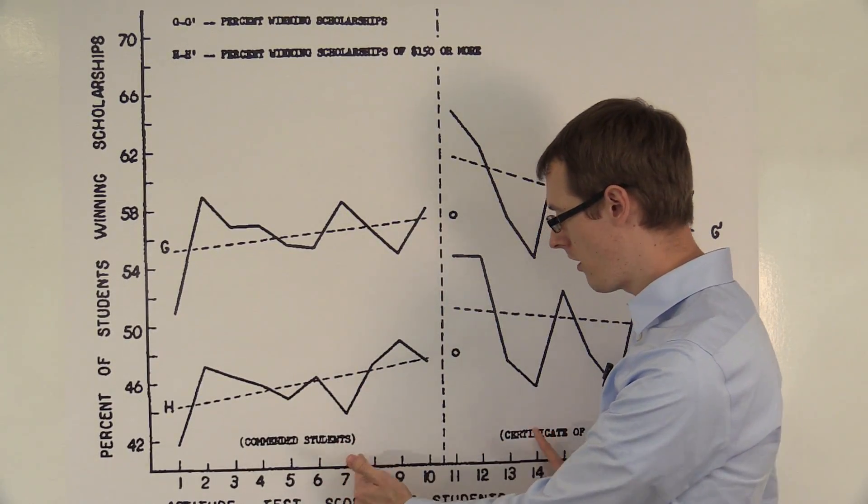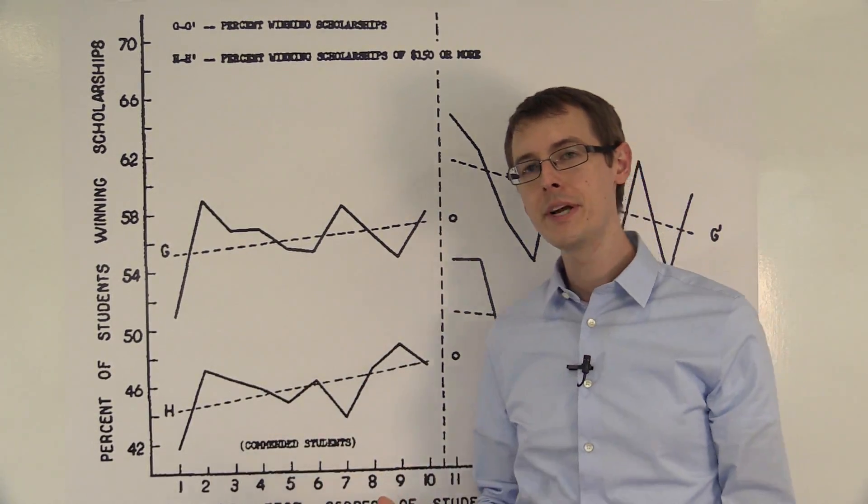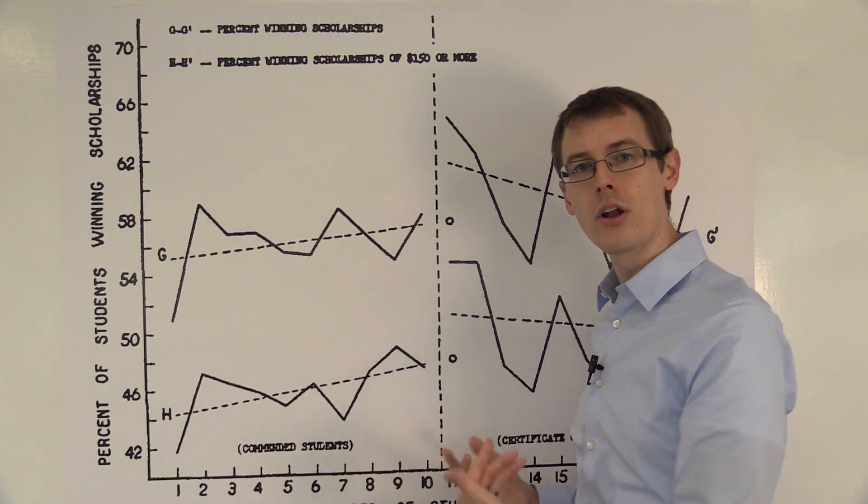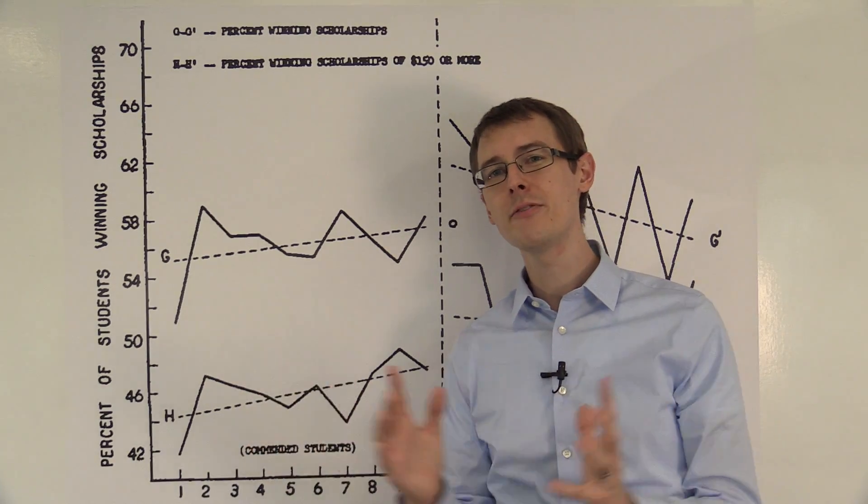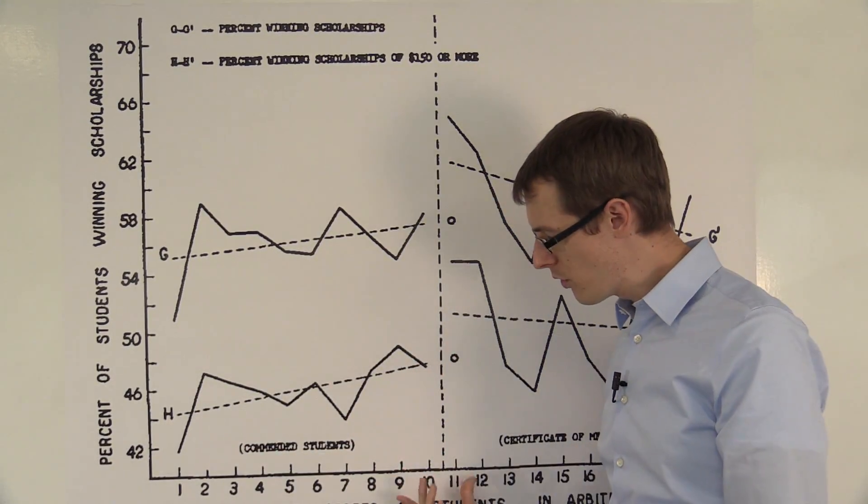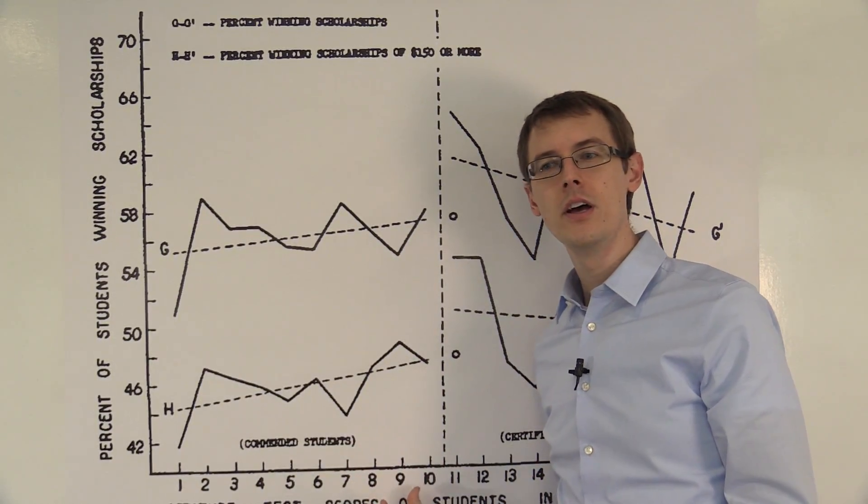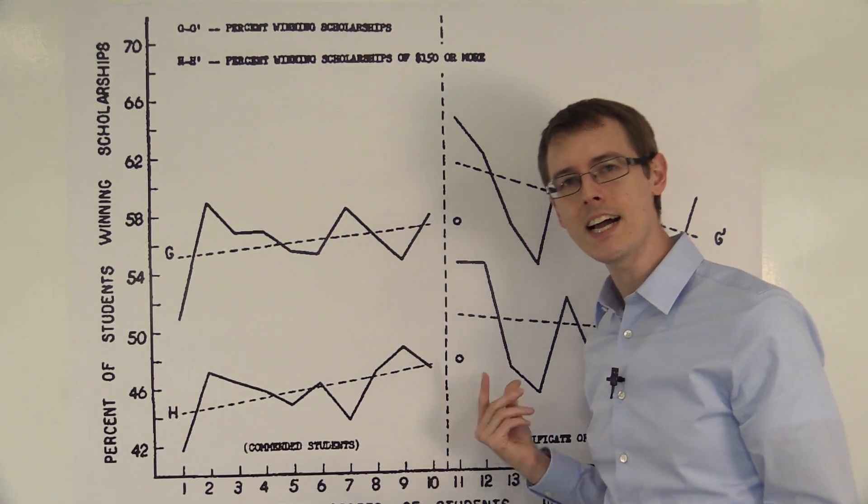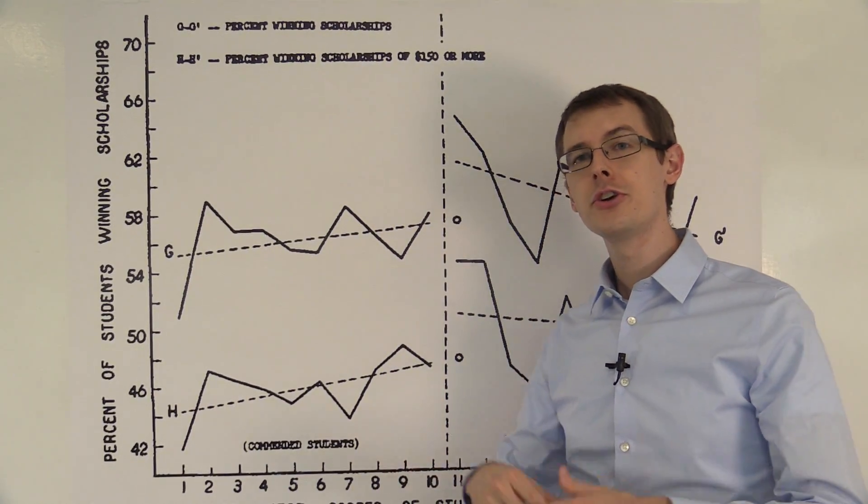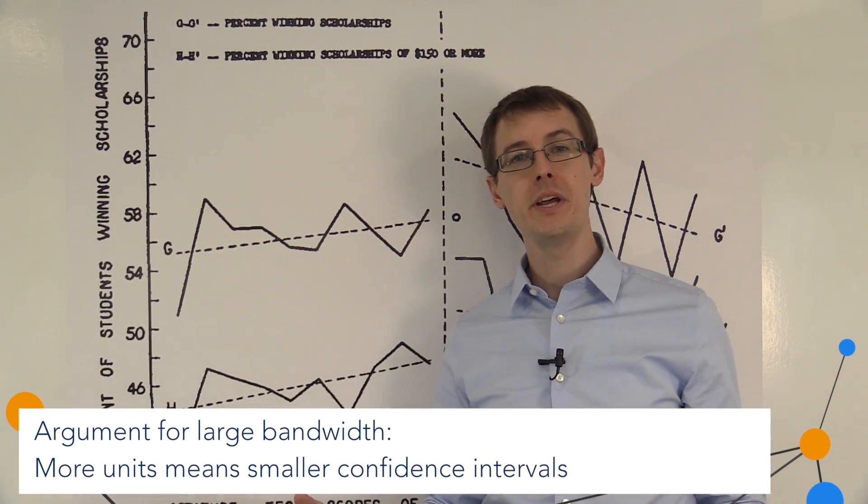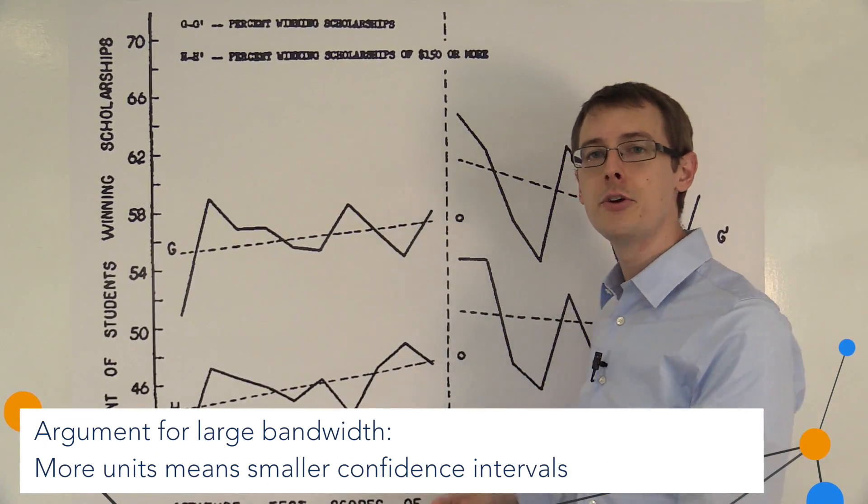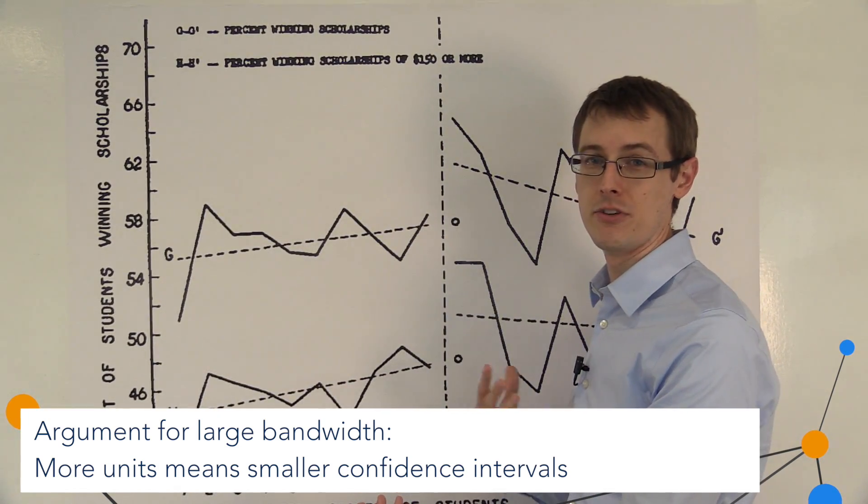Now why would you want to include more, keep going out further? One reason would be that you get more data. And the more data you include, we know that means your confidence intervals are going to go down. So if you look too close to the cutoff, you're going to have very little data, because there's not that many people who are exactly close to the cutoff, and so you're going to get big confidence intervals. So that's one benefit of using more, but the cost is that you're worried about confounding bias that enters in.